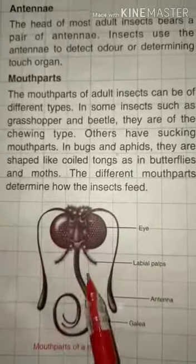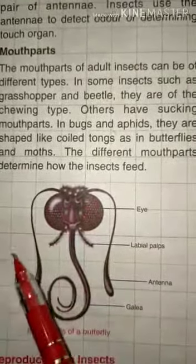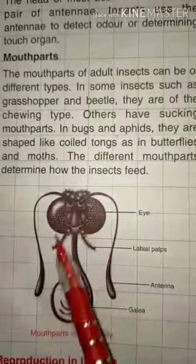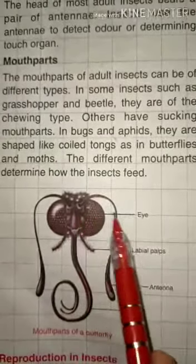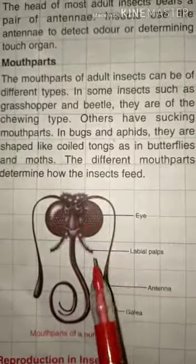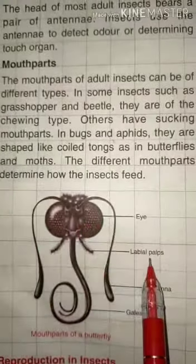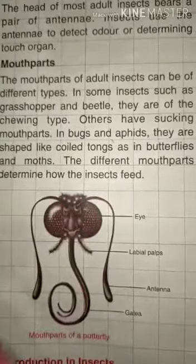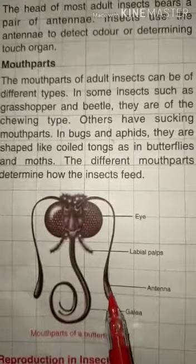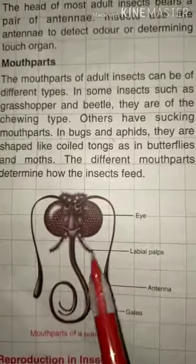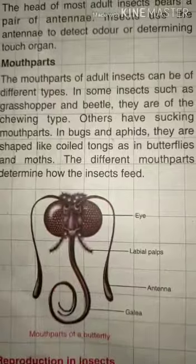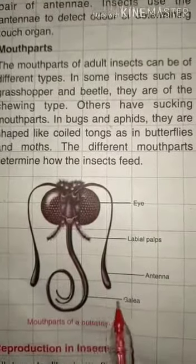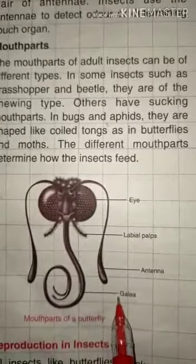Now see the mouth part of the butterfly. Here you can see the eye, labial palps, antenna — these two antennae — and here the galea.